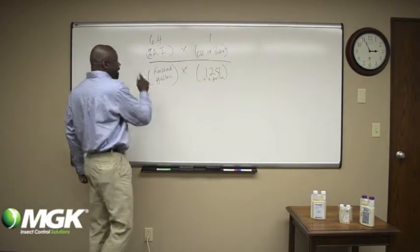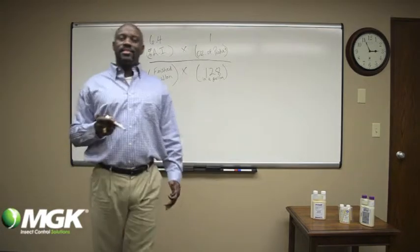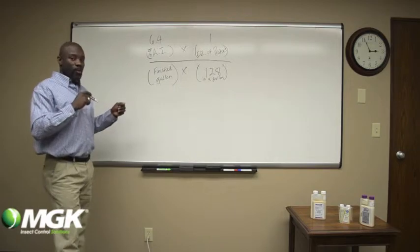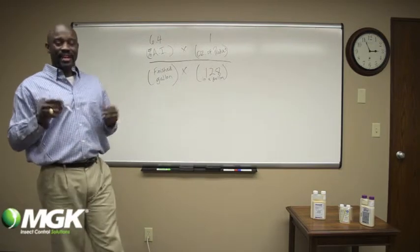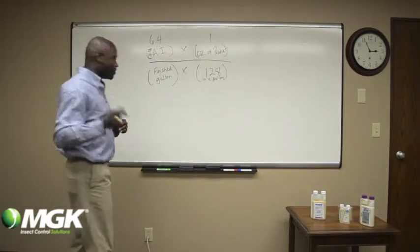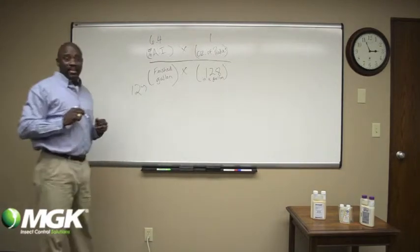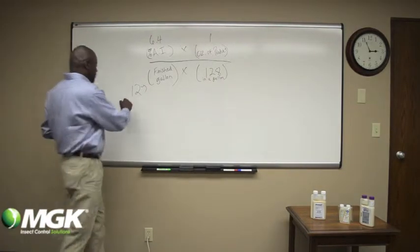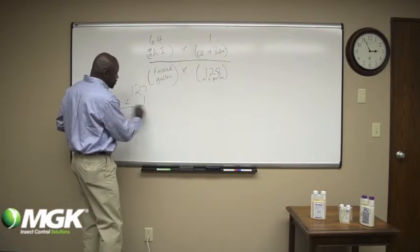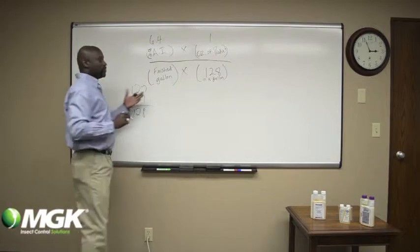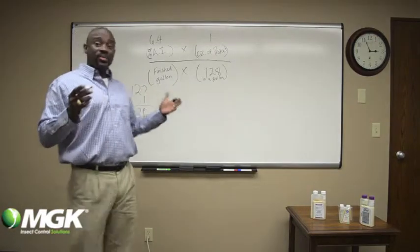Here is finished gallon. What this means is after you've added your product to the water, you're going to have a finished gallon of 128 fluid ounces. So that means you're only going to add 127 ounces of water plus your one ounce of product, which gives you 128. That's what finished gallon means.